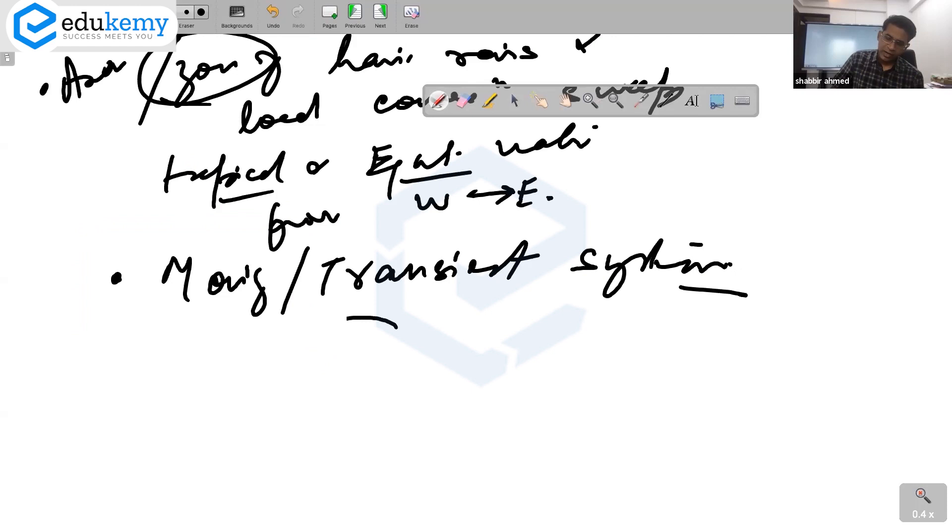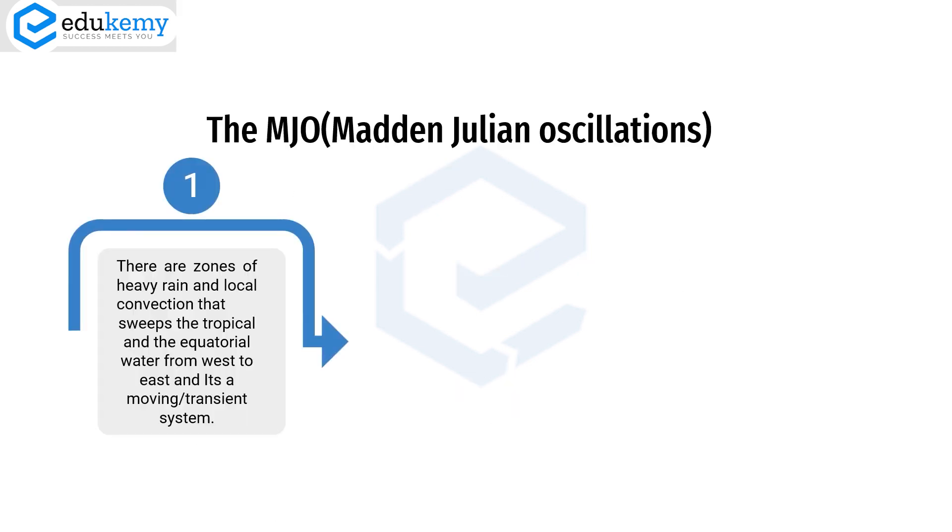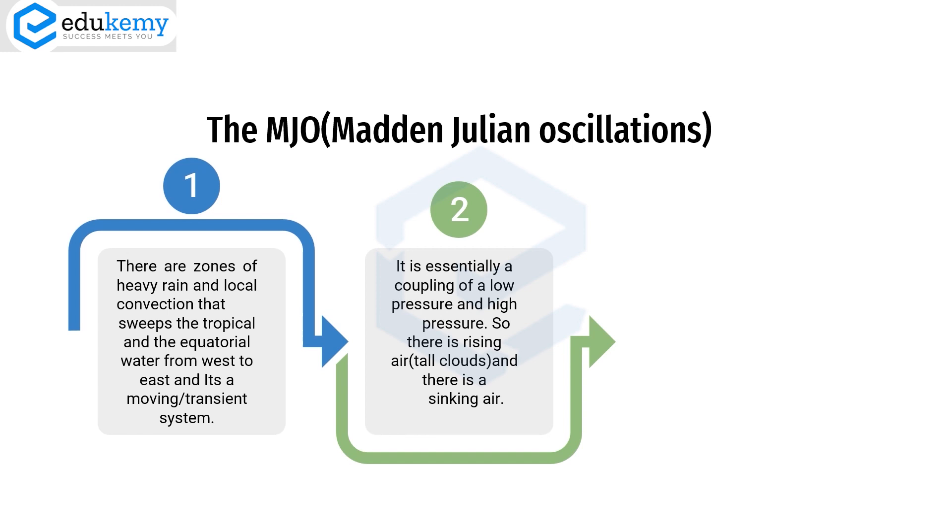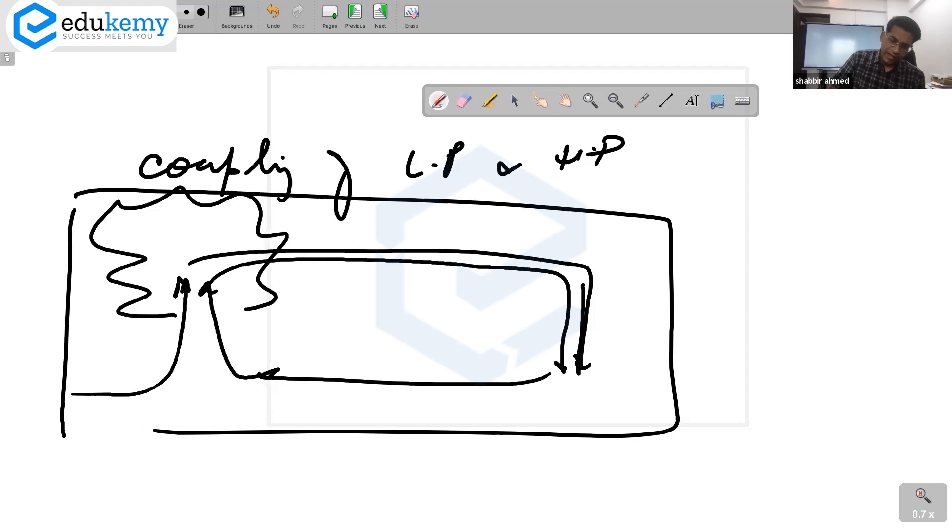If this is the globe here, equator here, tropics here. This is a zone of rainfall that starts moving from west towards east. It's a feature of tropical and equatorial waters. It's essentially a coupling of a low pressure and a high pressure. There is rising air, tall clouds, and there is sinking air. Wherever we have rising air, we will have good rains. Wherever we have sinking air, we will have subdued rains.